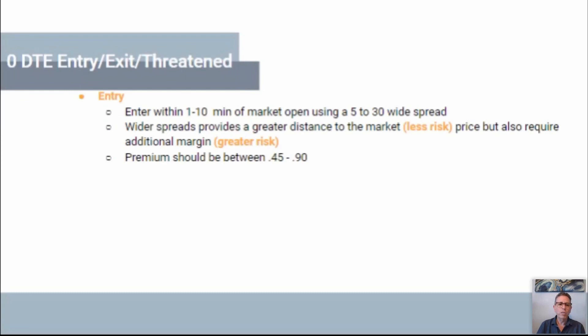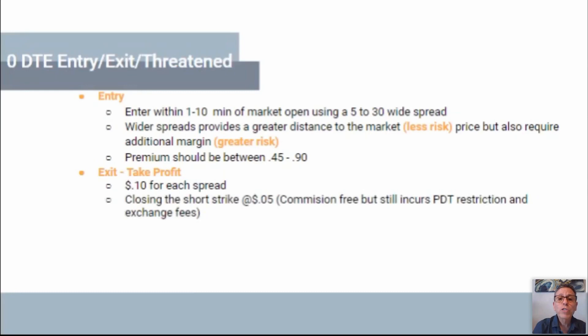A lot of traders also widen their positions and still use 50 to 70 cents to reduce risk. To close the short strike and take profit, you can do it for 10 cents or even 5 cents — it will still be a day trade but you collect more profit. In our group, I try really hard to allow them to expire — that way you don't have to worry about day trades. Expiration is just the other way to let that position go away.